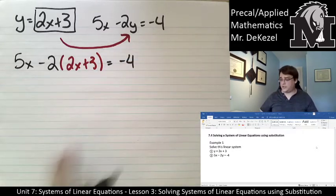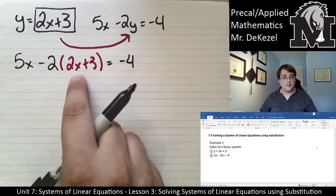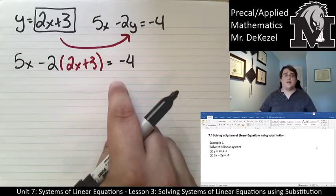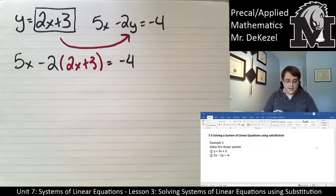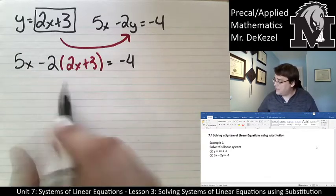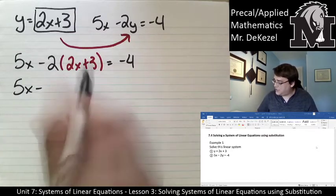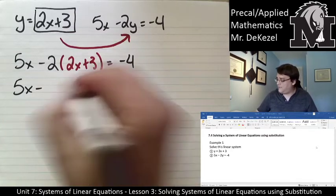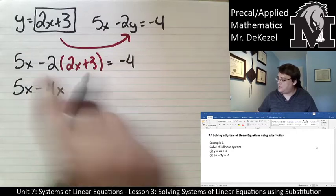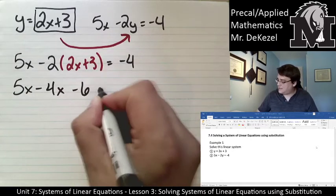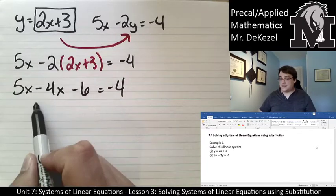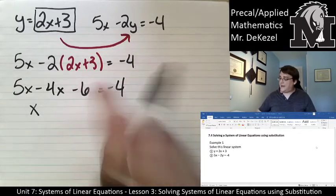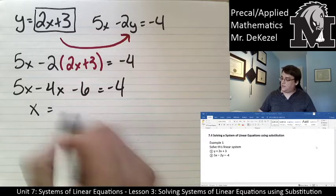Now I have an equation that is only in x and if I just simplify this, consolidate my like terms, rearrange and isolate x, I can find out what x is. So 5x minus 2 times 2 is 4x minus 2 times 3 is minus 6, that all equals minus 4. 5x minus 4x is just x and then I add 6 to both sides so that equals 2.